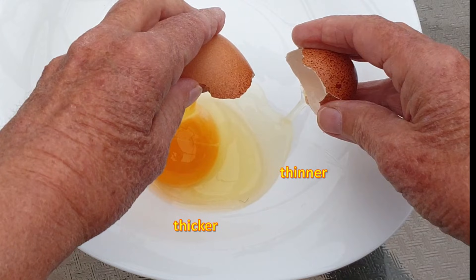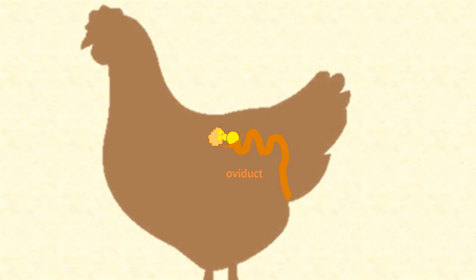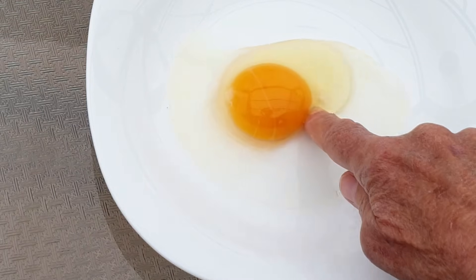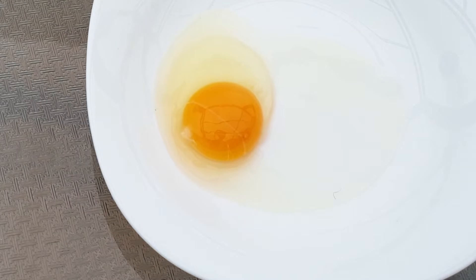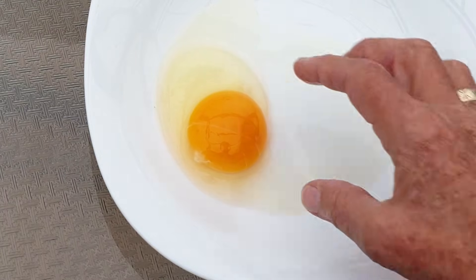The most obvious structure in the albumin is the chalazae. These are strands of thickened albumin that extend from the yolk to the top and bottom poles of the shell. When the egg is forming inside the hen, it rotates on its axis as it passes down the oviduct, and the chalazae get twisted into strong cords that hold the yolk in the centre of the egg. If you don't think you've ever seen any chalazae inside an egg, that's probably because they soften and fade away over time. Although they are quite obvious in a very fresh egg, they disappear as the egg is stored.